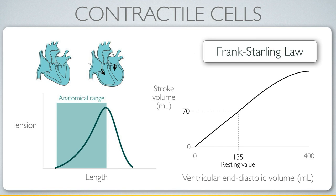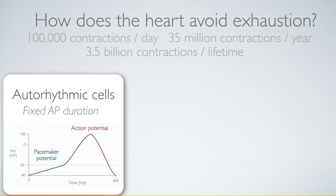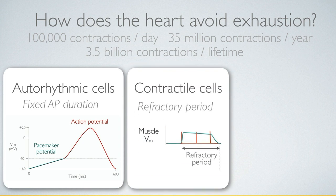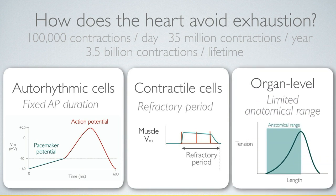So let's return to the initial question: how does the heart avoid exhaustion given that it contracts so many times in a lifetime? We've seen three measures. First, in the auto-rhythmic cells, the fixed duration of action potentials prevents the heart rate from driving the contractile cells at too high a frequency. Second, within the contractile cells themselves, the refractory period prevents activation at greater frequency than the refractory period permits. And finally, at the organ level, the anatomical range prevents hyperextension of muscle, which would cause a catastrophic drop in tension.